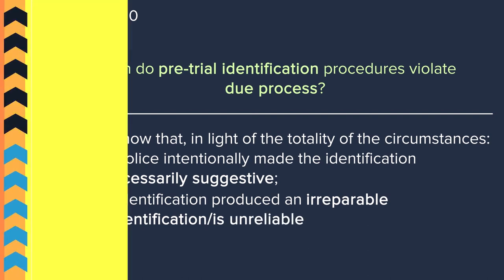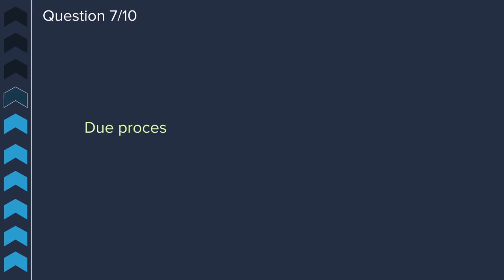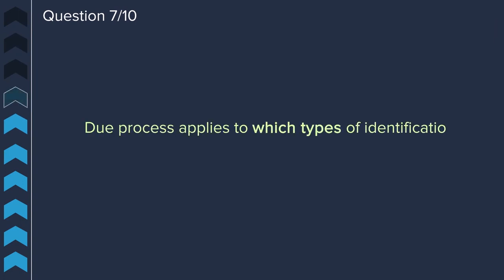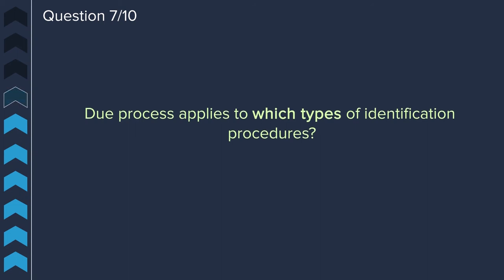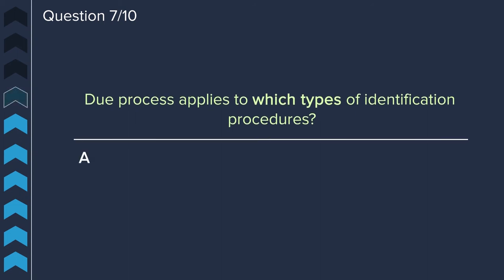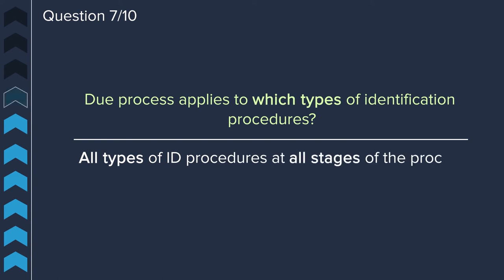Question seven: due process applies to which types of identification procedures? All types of identification procedures at all stages of the process.